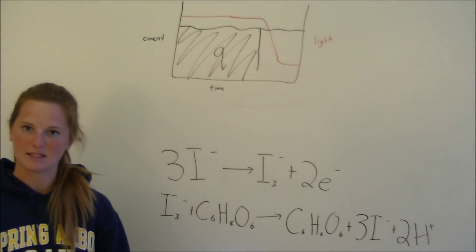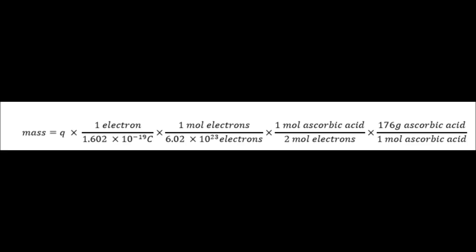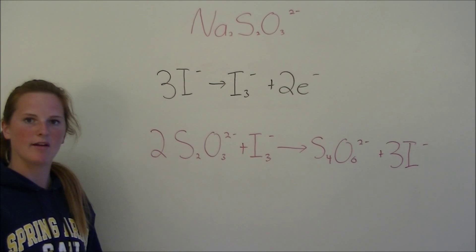Using those five pieces of information, we can determine the mass of the ascorbic acid in the orange juice. The equation will look as you can see on your screen here. It's going to be the charge that we computed thanks to Microlab, multiplied by the charge of an electron, multiplied by the number of electrons in a mole, which is then multiplied by our stoichiometry between the two electrons and the one ascorbic acid, and then that's multiplied by our molar mass. And that's how we get it.